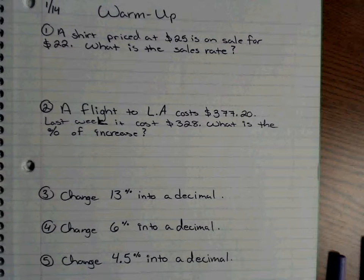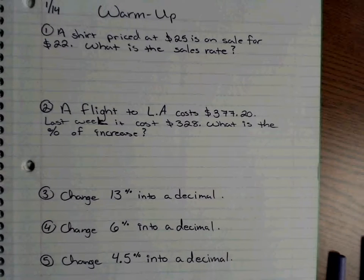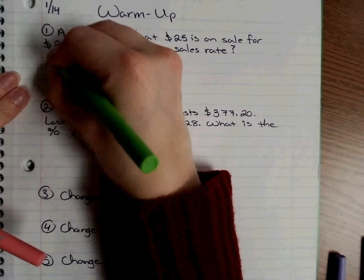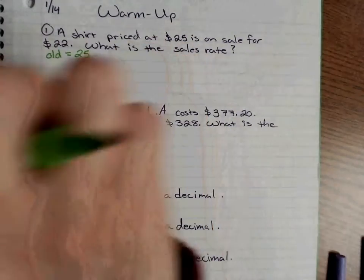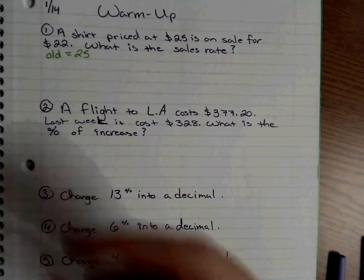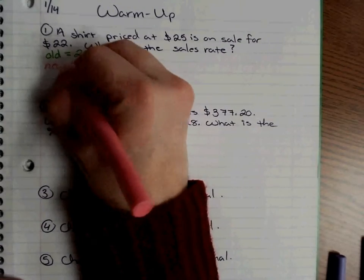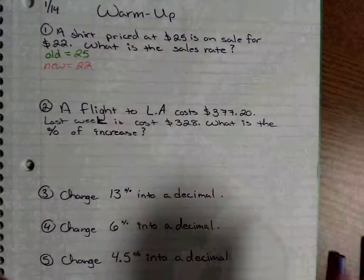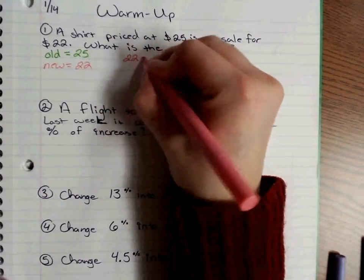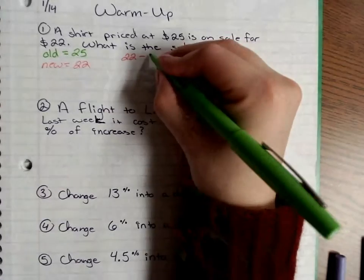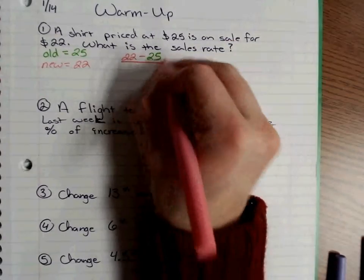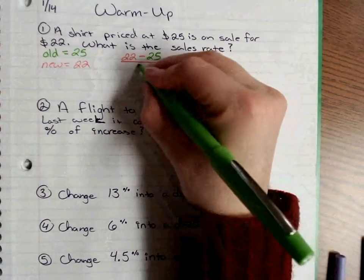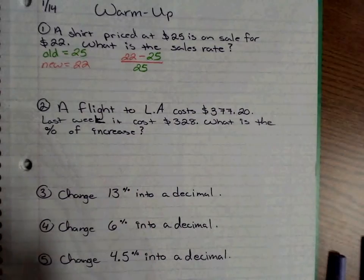The first thing you have to do — remember this is the process where it's new minus old divided by old times 100. So you need to identify what your old or original value is, which is 25, and your new value is 22. So you're going to do 22 minus 25, which gives you negative three. Then divide by 25.